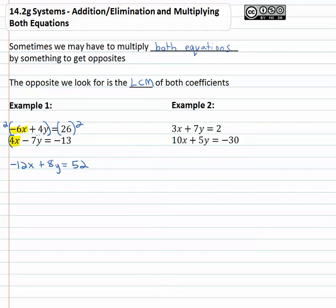The second equation to become positive twelve, because we already have the negative, we need to multiply the four by three. So we'll multiply both sides by three, again making sure we distribute the three to get positive 12x - 21y = -39.